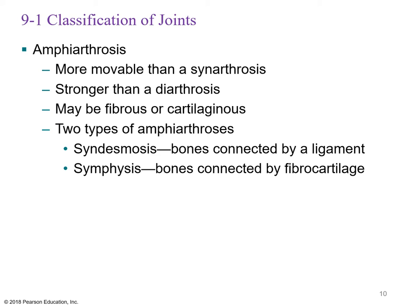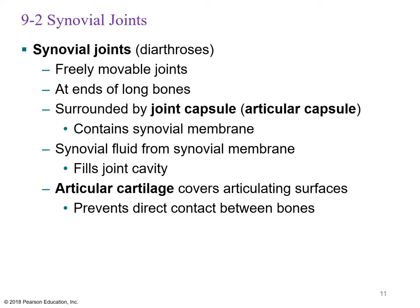An amphiarthrosis is more movable than a synarthrosis but not freely movable — it moves and gives. These joints are stronger than diarthrodial joints. There are two types: a syndesmosis, connected by a ligament, and a symphysis, where bones are connected by fibrocartilage, such as the pubic symphysis.